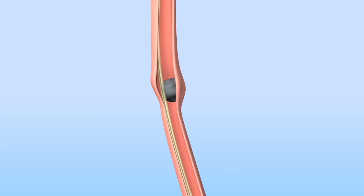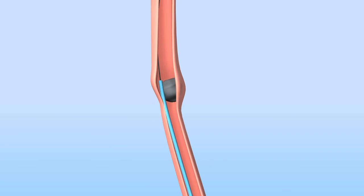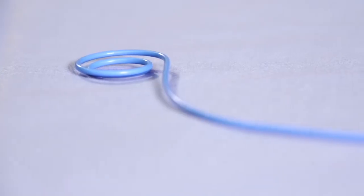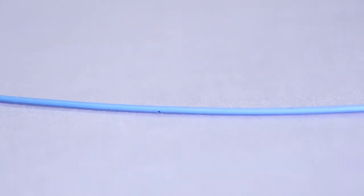A wire is then placed through the ureteric catheter, past the stone to the kidney, and then a ureteric stent is placed around the stone. A stent looks like this. It's a plastic tube with holes in it and curls on either end. It's often called a double...